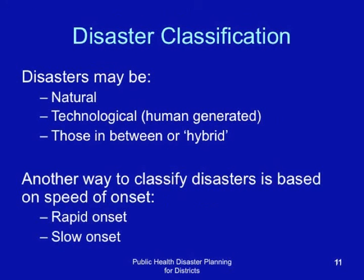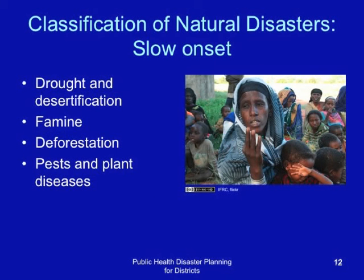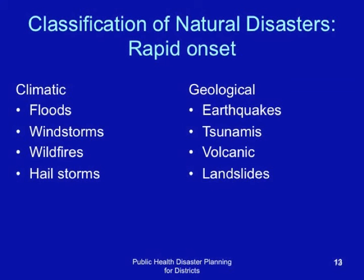Disasters may be natural, they may be technological — that is human-generated — and then there are those that are in between, also called hybrid disasters. Another way to classify disasters is based on the speed of onset; disasters may be rapid onset or slow onset. Slow onset natural disasters could include drought and desertification, famine, deforestation, pests, and plant diseases. Rapid onset natural disasters may include climatic disasters like floods, windstorms, wildfires, and hailstorms, and geological disasters like earthquakes, tsunamis, volcanic activity, and landslides.